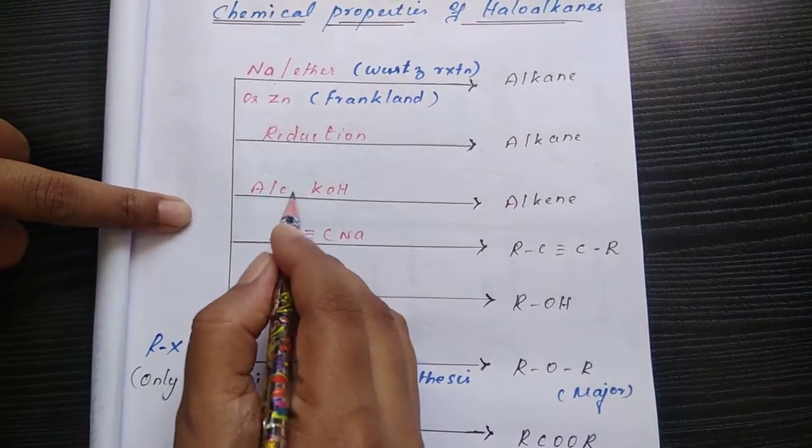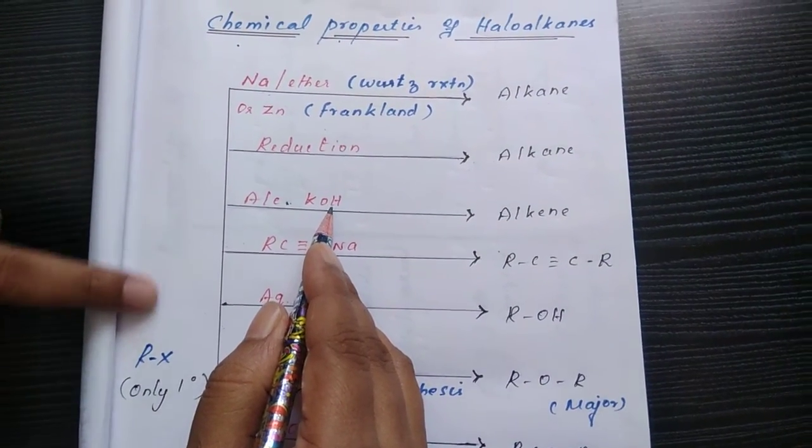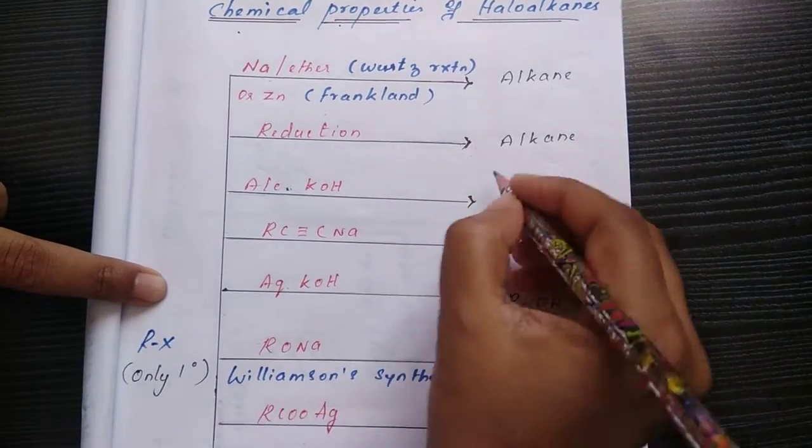Then alcoholic KOH, if you are choosing alcoholic KOH, this undergoes elimination reaction. We get alkene as a product.